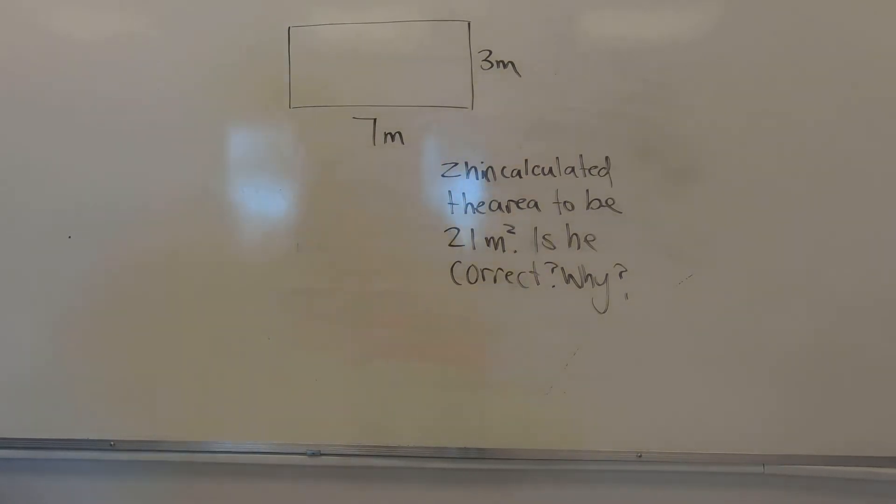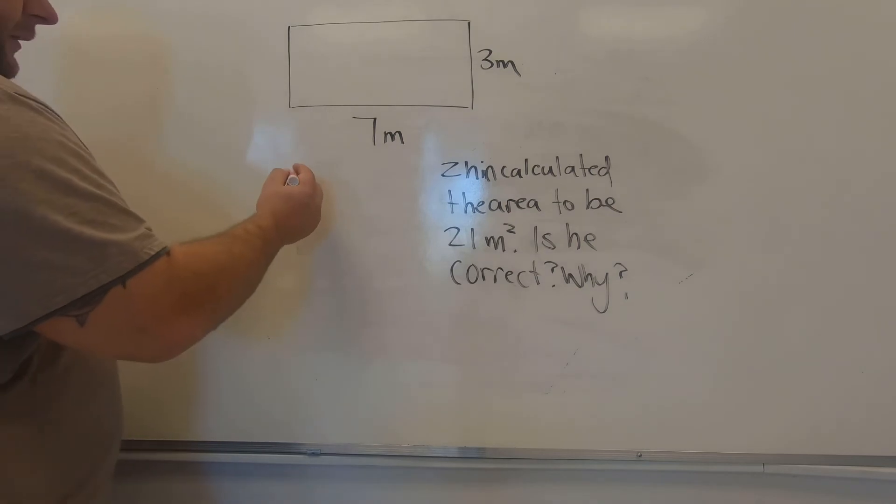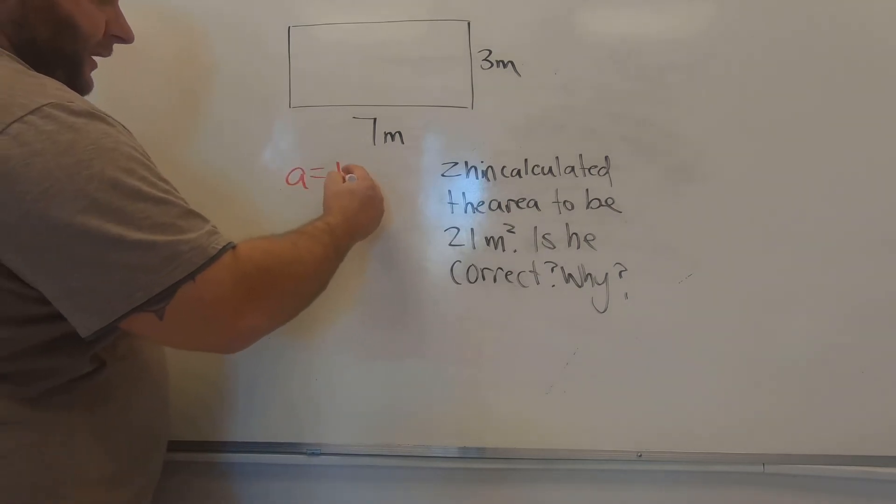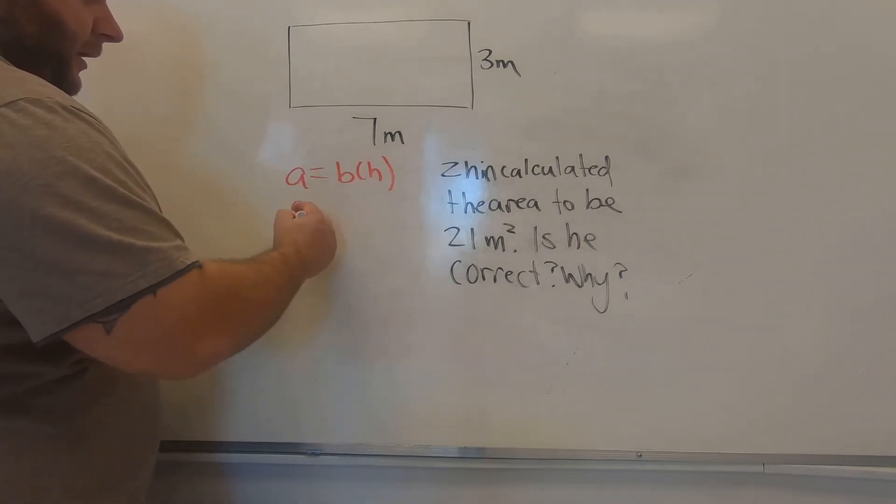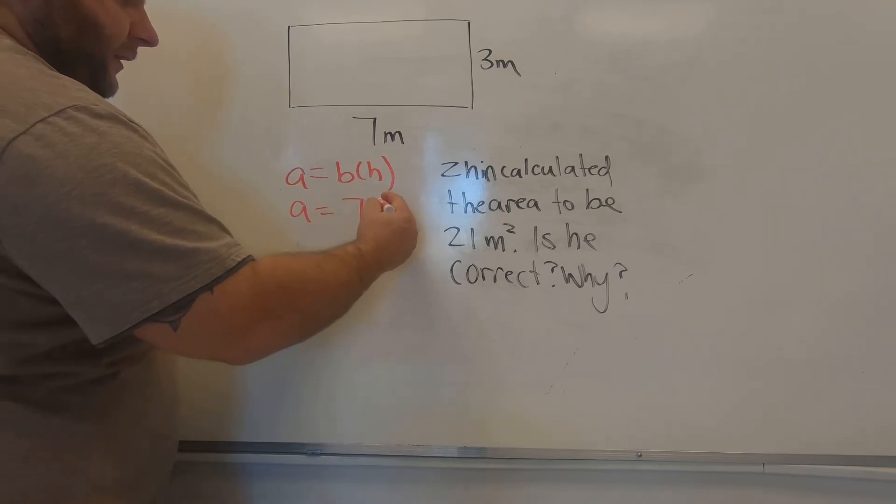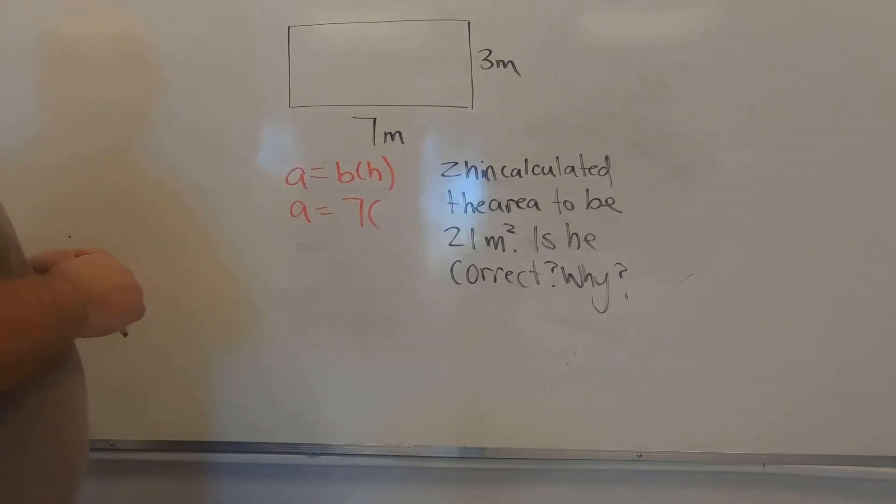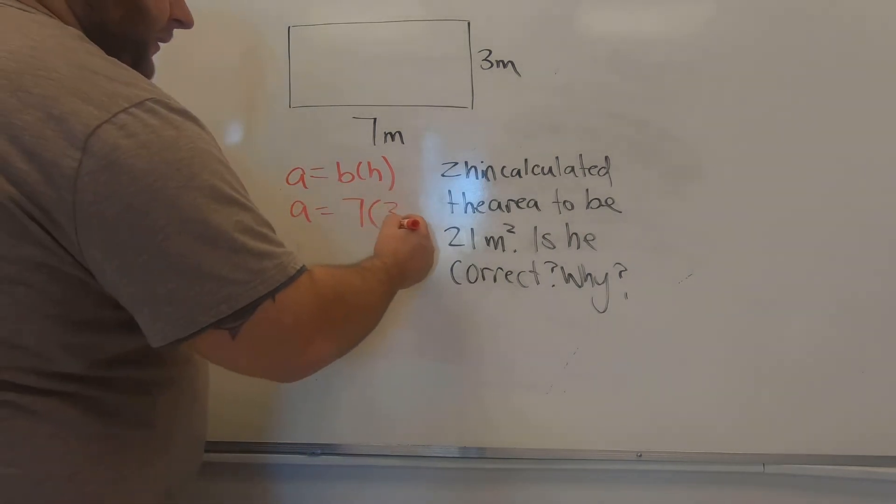Now, let's take a look at our formula. Area equals base times the height. Area equals 7 times. Now, let's take a look at this 3 meters. Is 3 meters the height in this type of shape? Now, the answer is yes, it is.